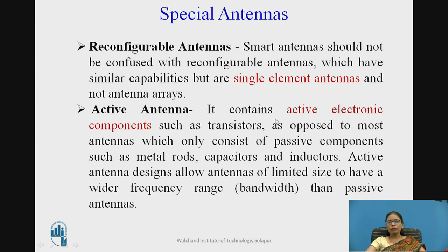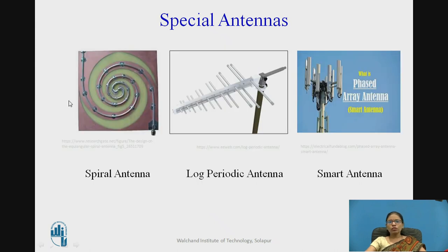The active antenna contains active electronic components such as transistors, as opposed to antennas consisting only of passive elements like metal rods, capacitors, and inductors. Active antennas allow limited-size antennas to have a wider frequency range due to the use of active elements such as transistors. Special antennas shown here include a spiral antenna, a log-periodic antenna, and a smart phased array antenna. Spiral and log-periodic antennas will be explained in further videos.